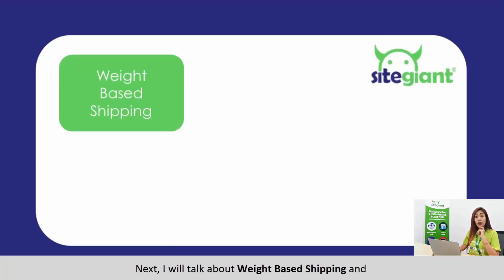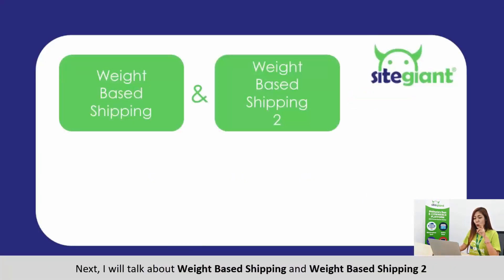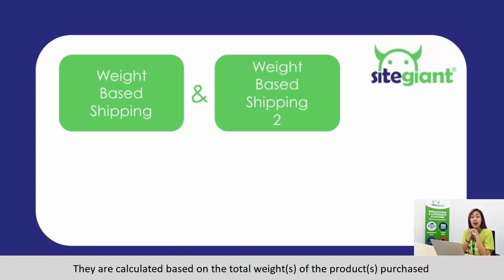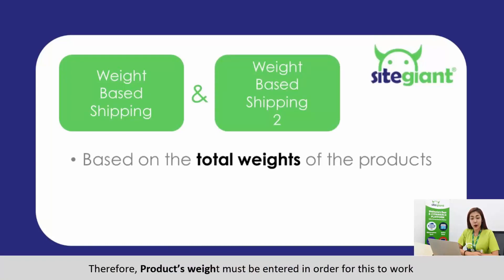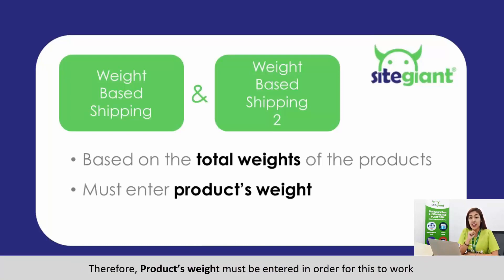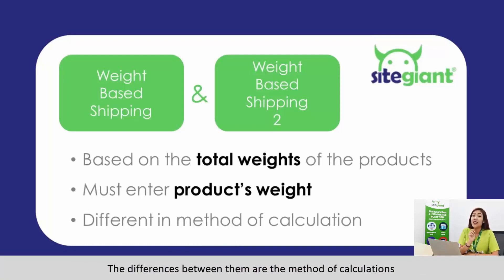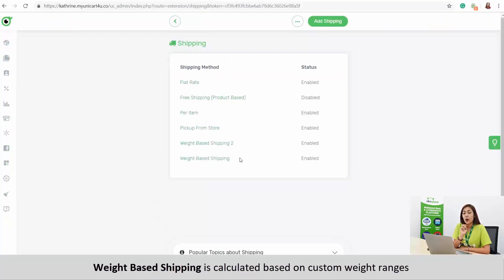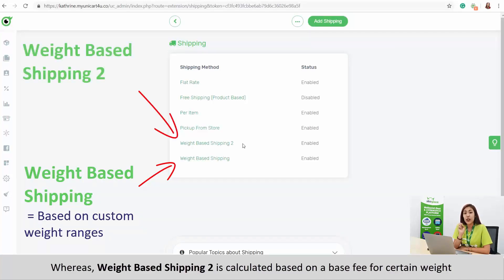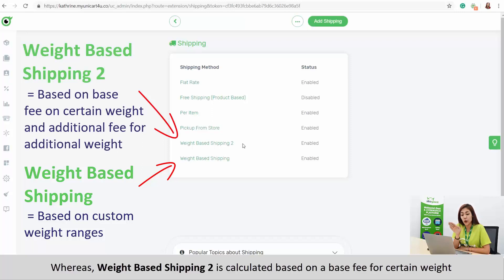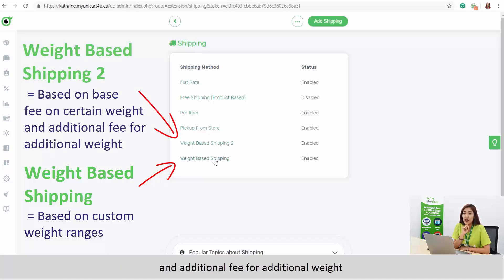Next, I will talk about weight based shipping and weight based shipping 2. They are both calculated based on the total weight of the products purchased. Therefore, product weight must be entered in order for this to work. The difference between them is the method of calculation. Weight based shipping is calculated based on custom weight ranges, whereas weight based shipping 2 is calculated based on a base fee for a certain weight and an additional fee for additional weight.